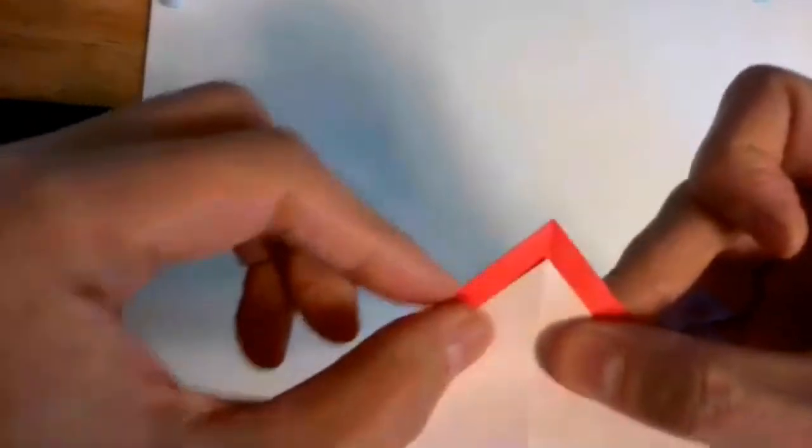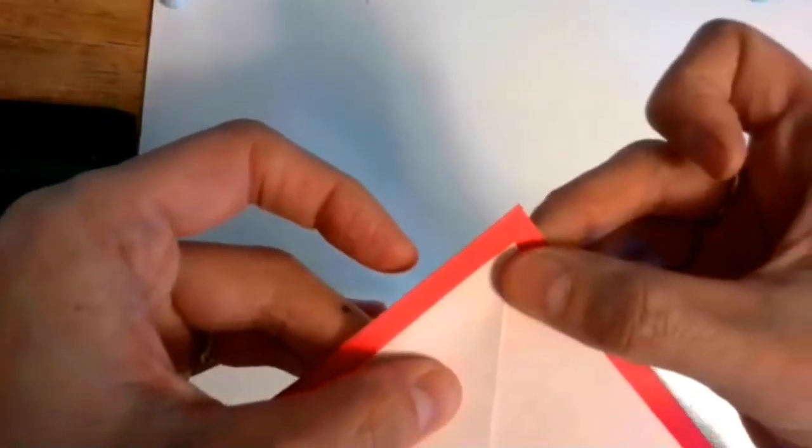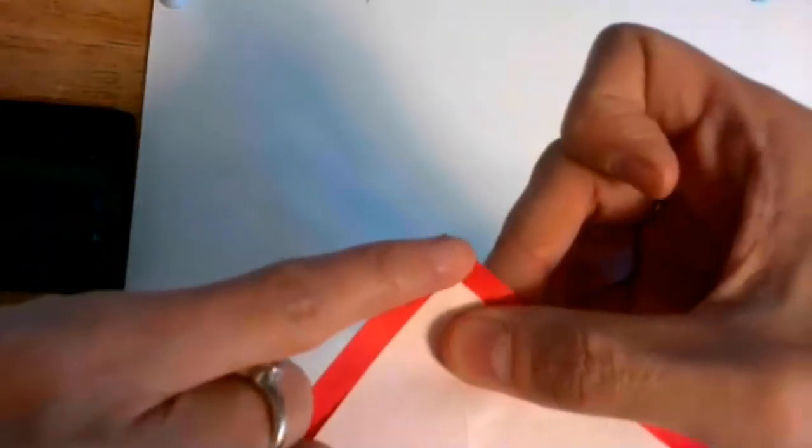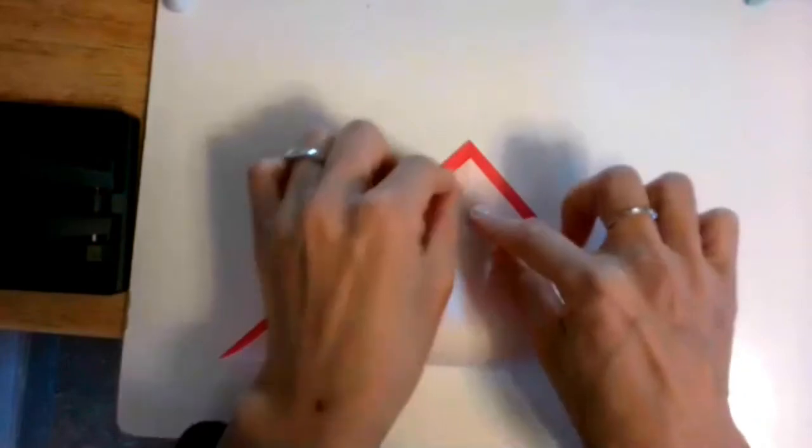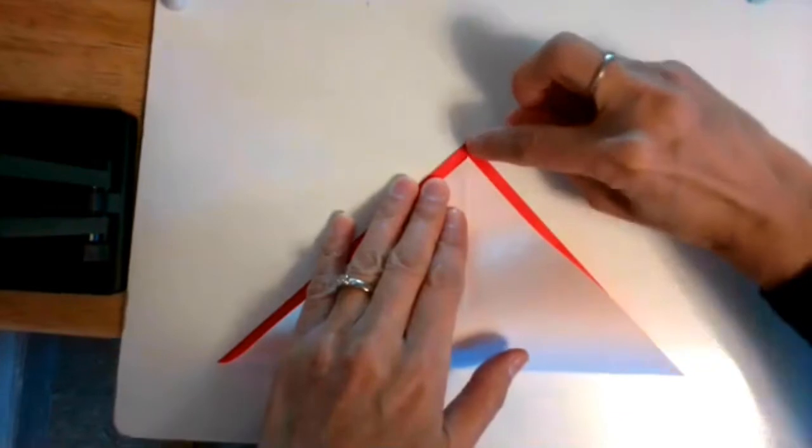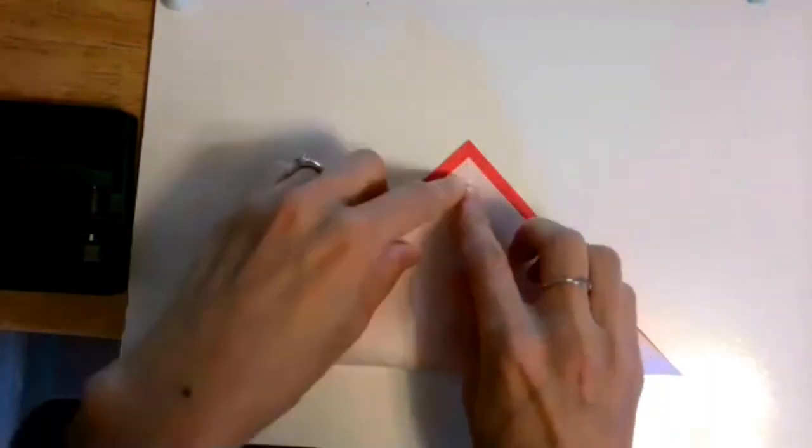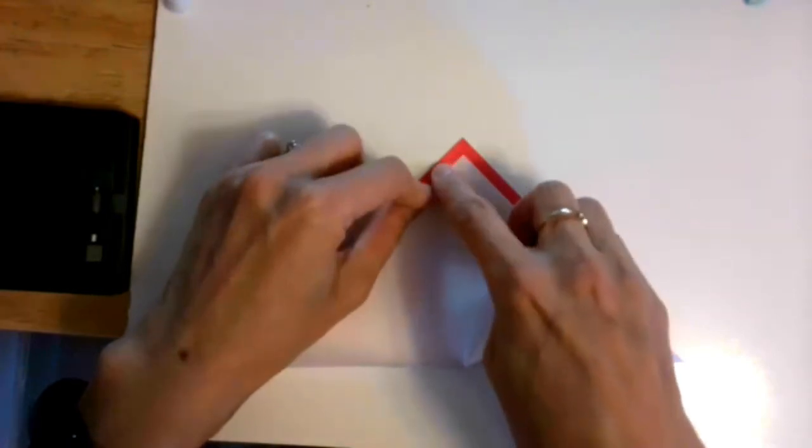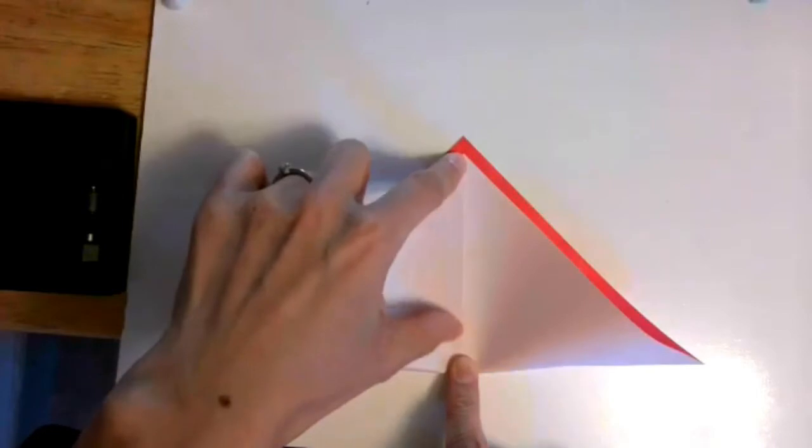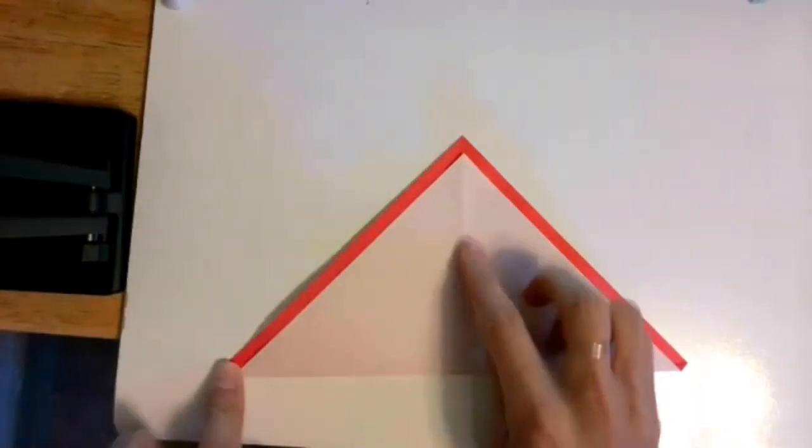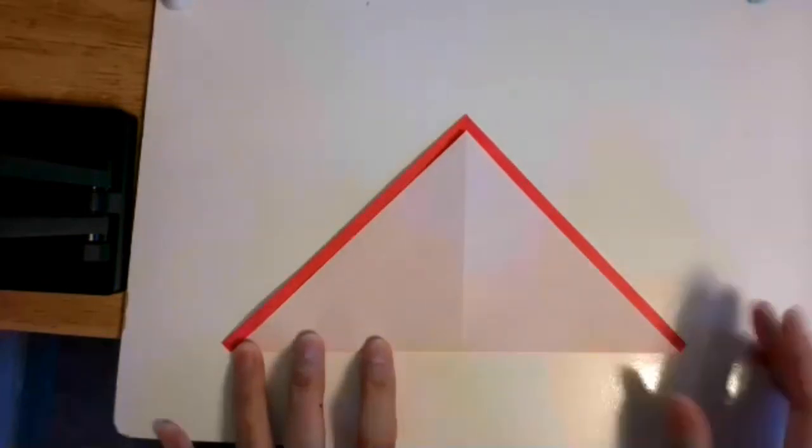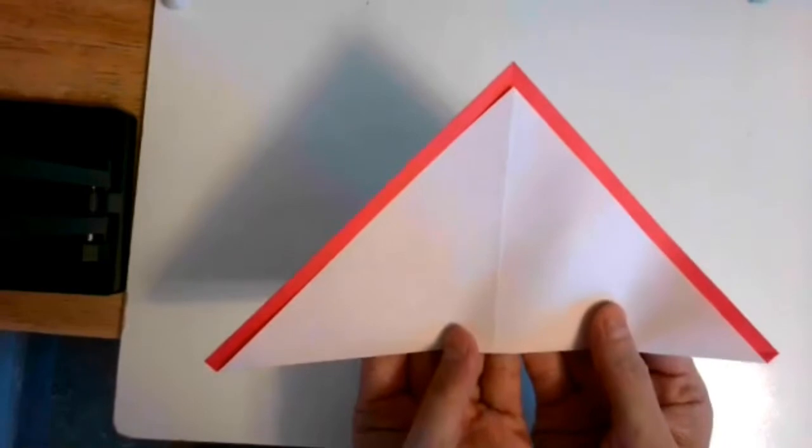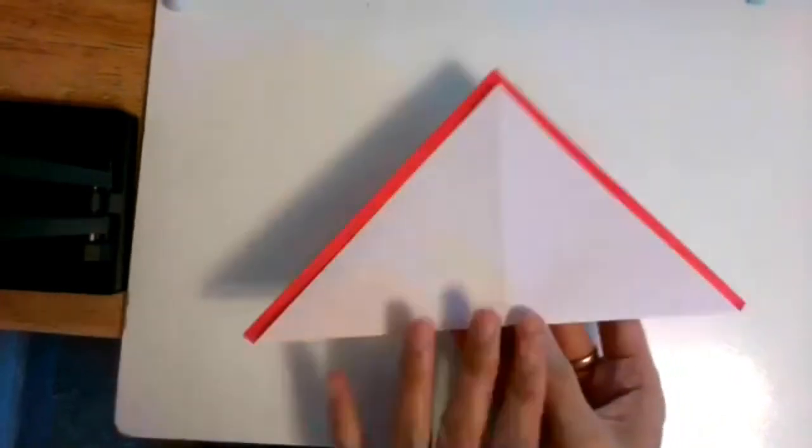This gap could be more or less depending on how thick of a stripe you want. The gap should be the same thickness all the way around. Once you take this corner to where it should go, slide your finger to the bottom and crease it. This is what it should look like. Once you get this far, turn the paper over to the other side.